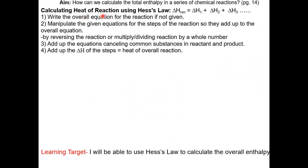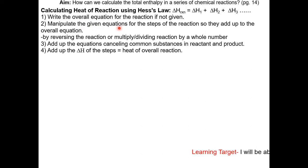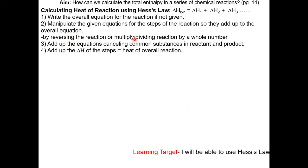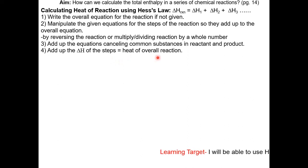Here is a procedure on how to calculate the heat of reaction using Hess's Law. The delta H of reaction equals the sum of the delta H of each step. Step 1: write the overall equation for the reaction if it is not given. Step 2: manipulate the given equations so they add up to the overall equation — you can reverse the reaction or multiply/divide by a whole number. Then cancel common substances on the reactant and product sides, and add up the delta H of each step to get the heat of the overall reaction.